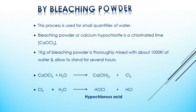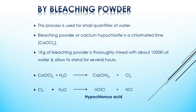Disinfection by adding bleaching powder. This method is used for small quantities of water. Bleaching powder is chemically calcium hypochlorite. In practice, about 1 kg of bleaching powder is thoroughly mixed with about 1000 kL of water and allowed to stand for several hours.